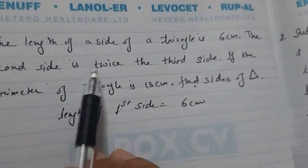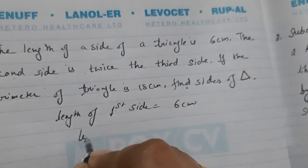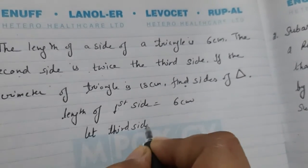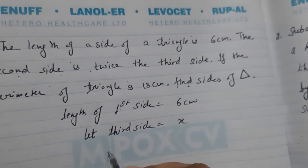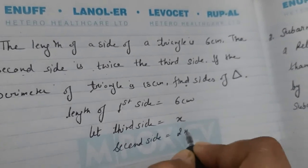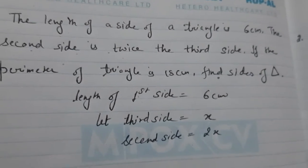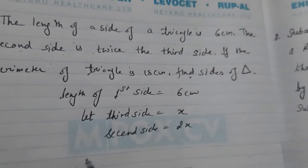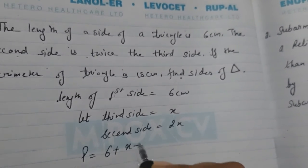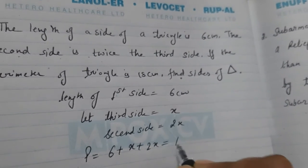Now, the condition is, the second side is twice the third side. So, let third side be X. So, second side will be twice X. And, we know what is the perimeter of triangle. Perimeter of triangle is sum of sides. X plus 2X. That is given, that is 18 cm.